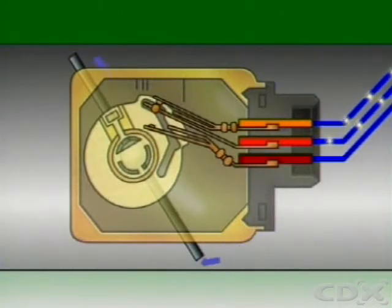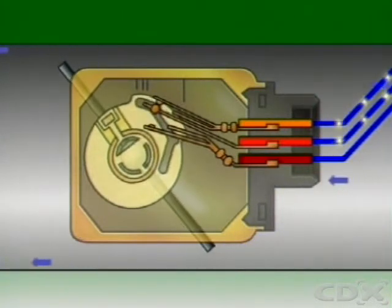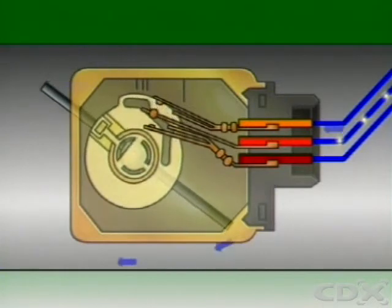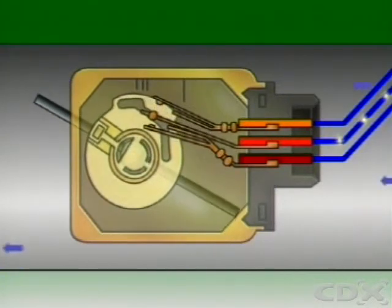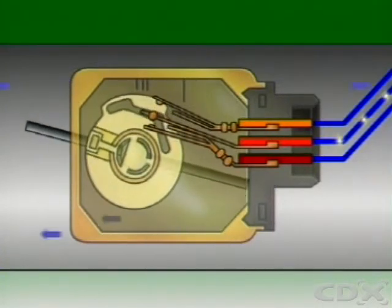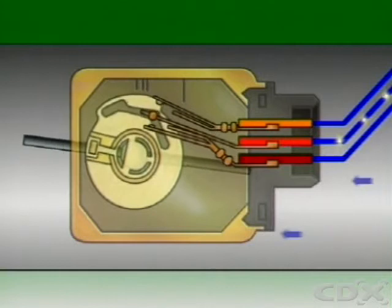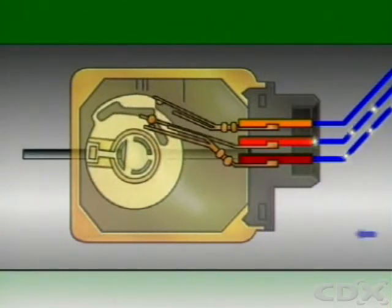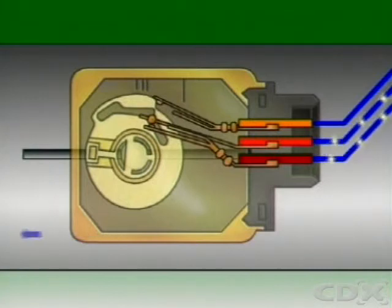Slightly rotating the throttle shaft opens the idle contacts. As the throttle approaches the wide open position, the full load contacts close. The ECU reads the full load signal and enriches the mixture to suit.